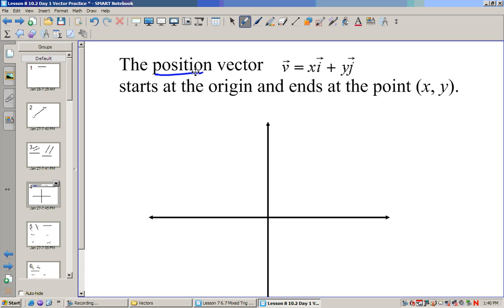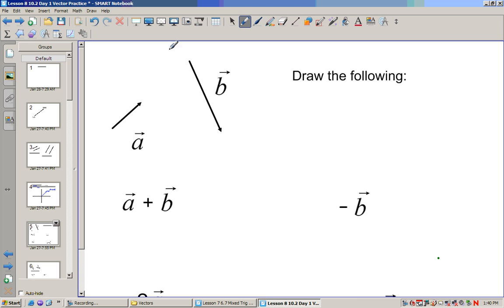But a position vector starts at the origin and ends at the other point xy. So let's say if I do vector 3i plus 4j, that means we go 3 to the right and 4 up, and it ends here at the point. That's a position vector, starting at the origin.